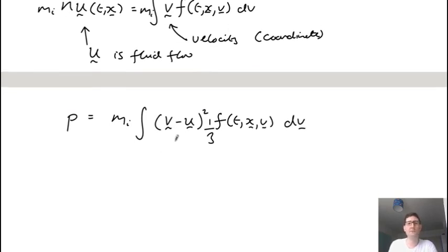One of the problems we'll come across is that the equation for the pressure depends on the third power of this. This is the heat flux, and the heat flux depends on the fourth power, and so on. So there's a problem with so-called closure, which we'll come back to in later videos.